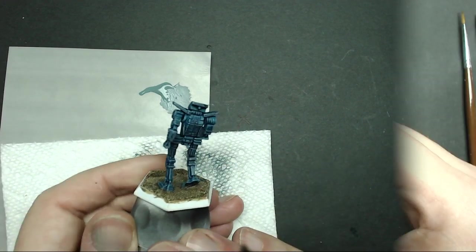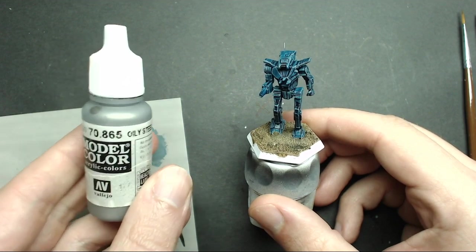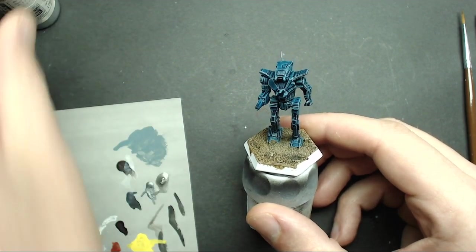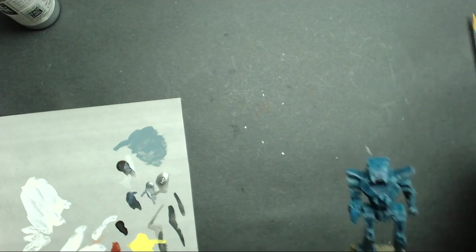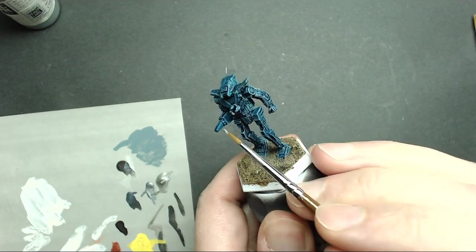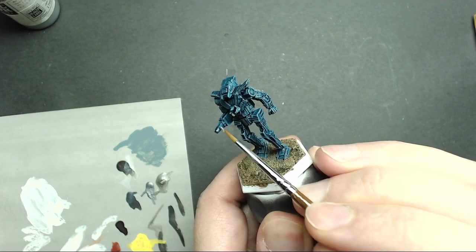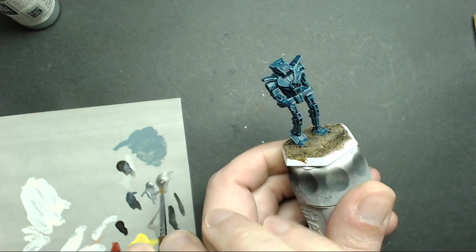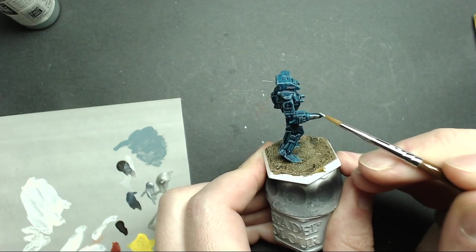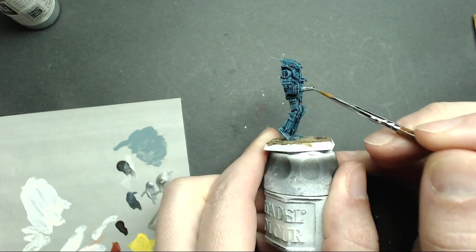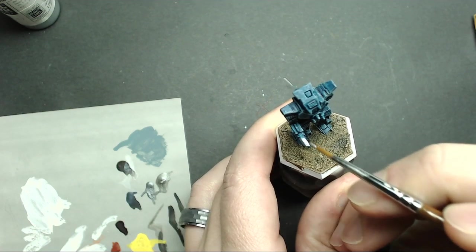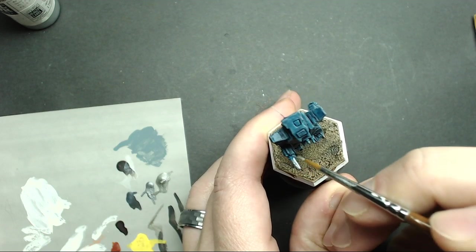I'm going to start out with some oily steel to set some details off on this miniature. Gun barrels, jump jets, hands, leg joints, things like that. I'm going to use a smaller synthetic brush. Use a little bit of water to thin the paint and just apply it directly onto the areas that you want to have silver. Take your time with this. If you make a mistake, try to clean it up quickly. You can use a brush with some water on it or a paper towel. You can even use your finger to wipe it away.